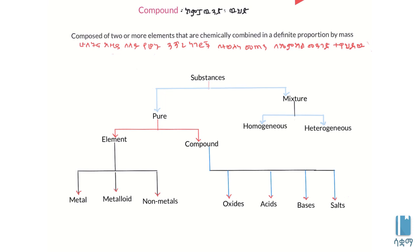The pure substance is composed of elements and compounds. The elements can be metal, metalloid, and non-metal. The compounds include oxides, acids, bases, and salts.